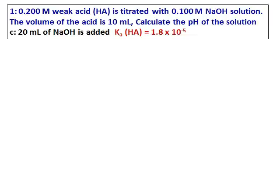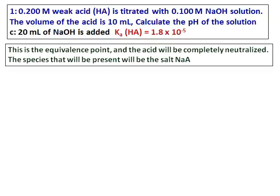Let's do part C. In this case, I am adding 20 milliliters of sodium hydroxide — this is the equivalence point, and the acid will be completely neutralized. The species that will be present will be the salt, NaA.